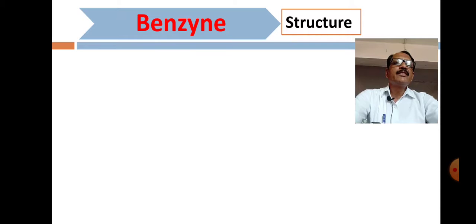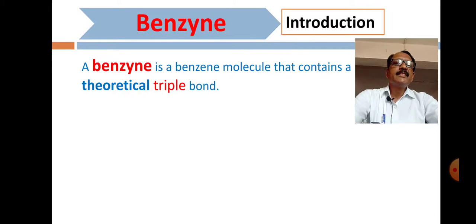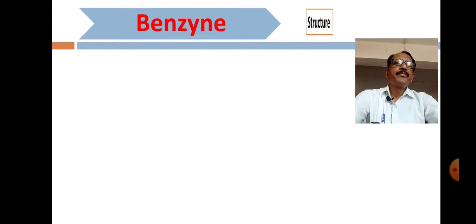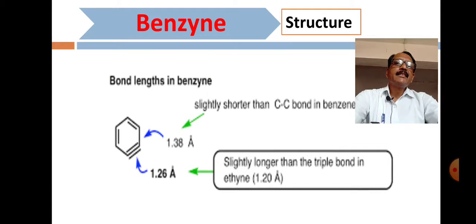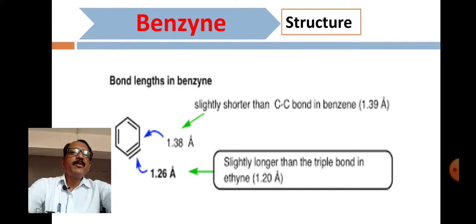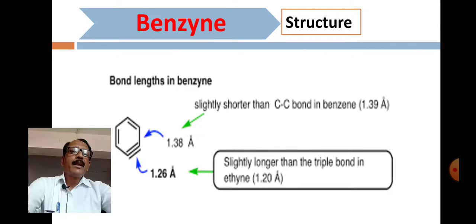Remember the structure of benzyne. Bond lengths are given here: the single bond length is 1.38 Å and the triple bond length is 1.26 Å.